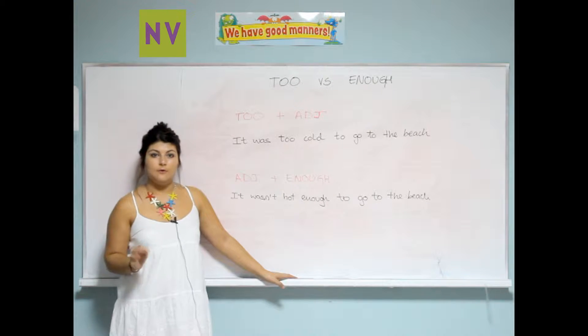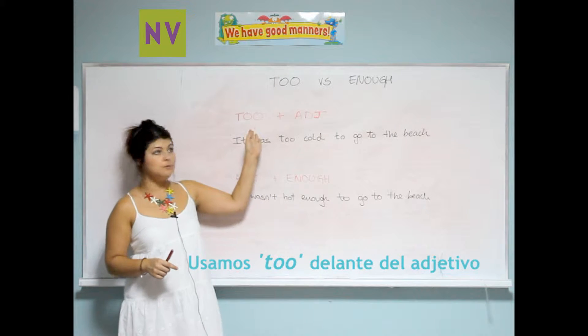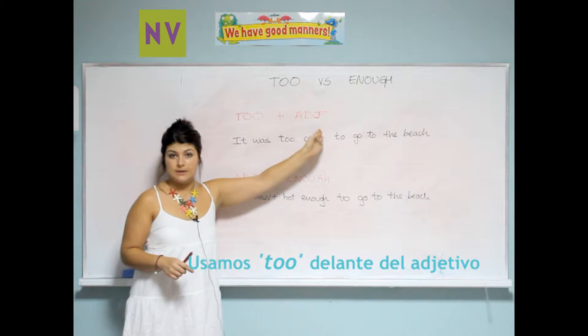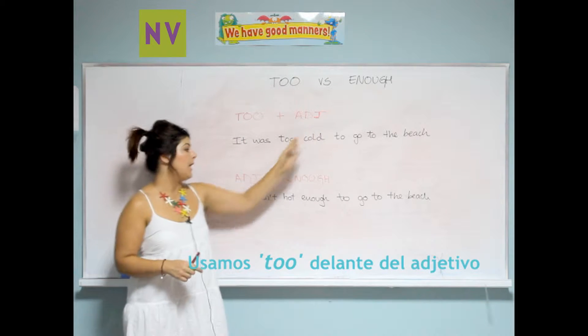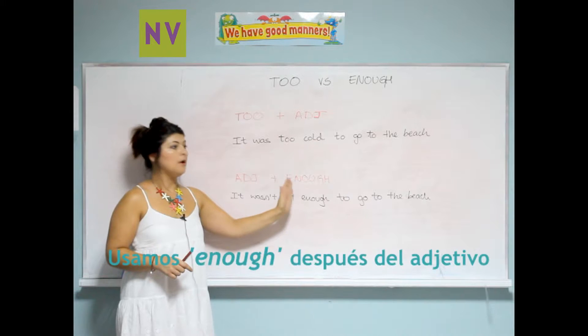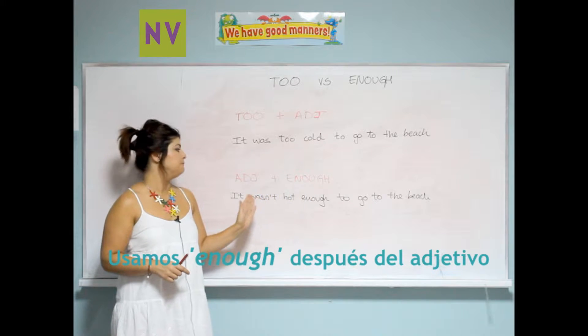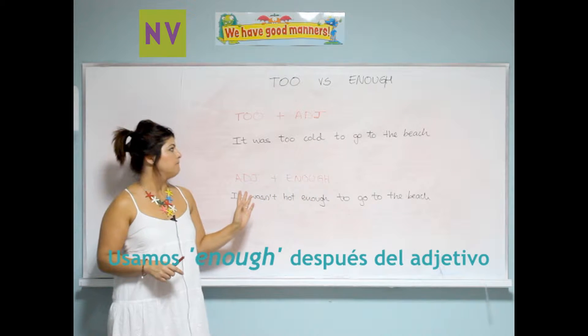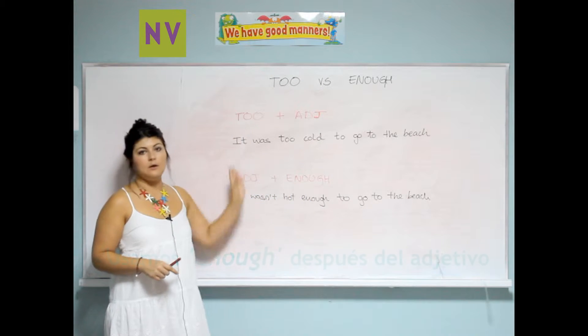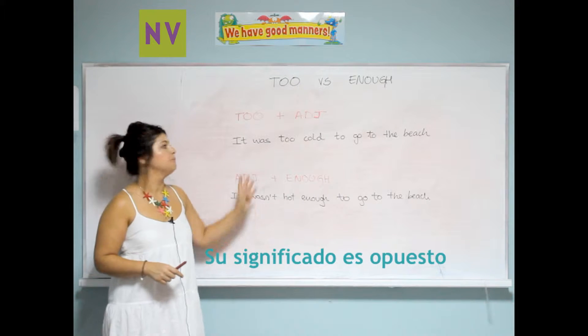The first difference is that we use 'too' before the adjective and 'enough' is used after the adjective. The meaning is totally opposite as well.